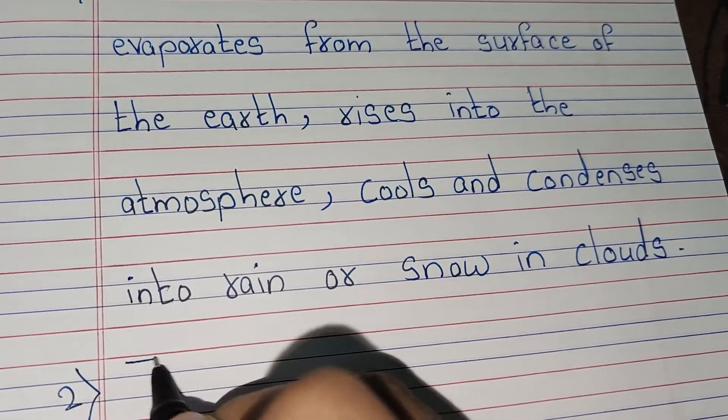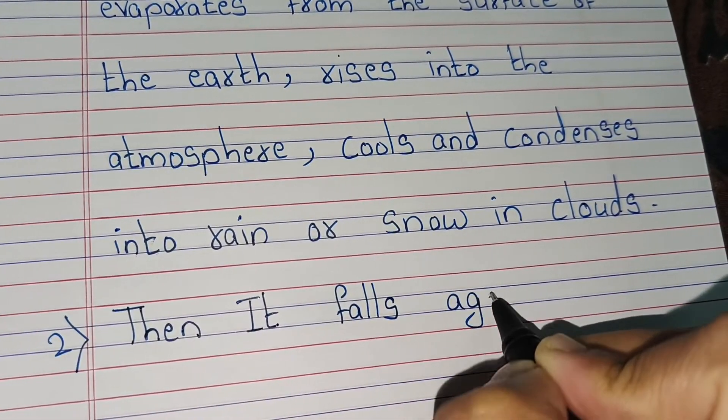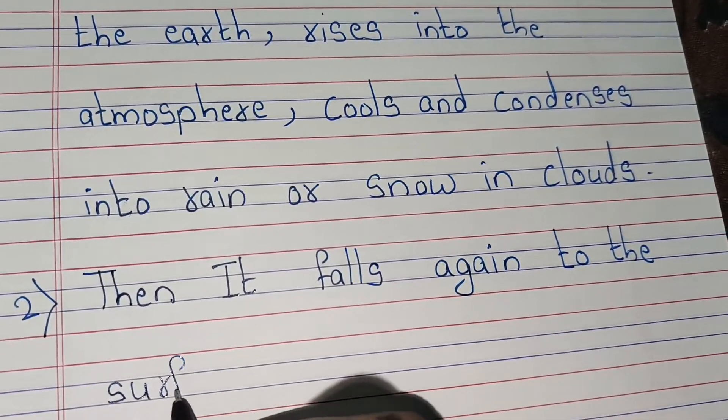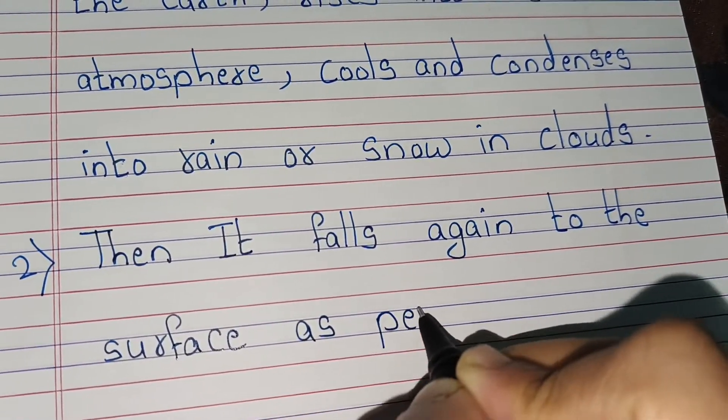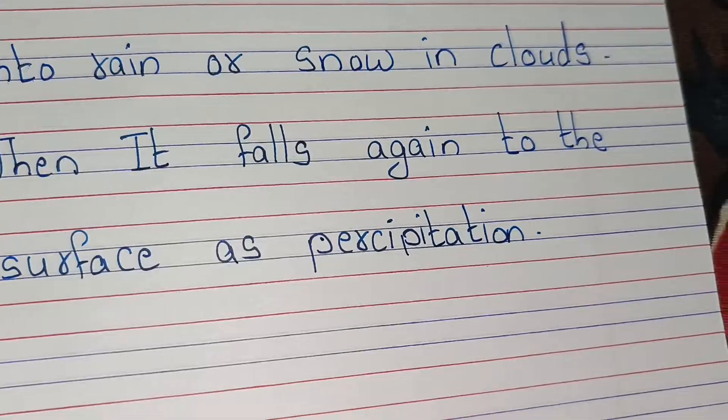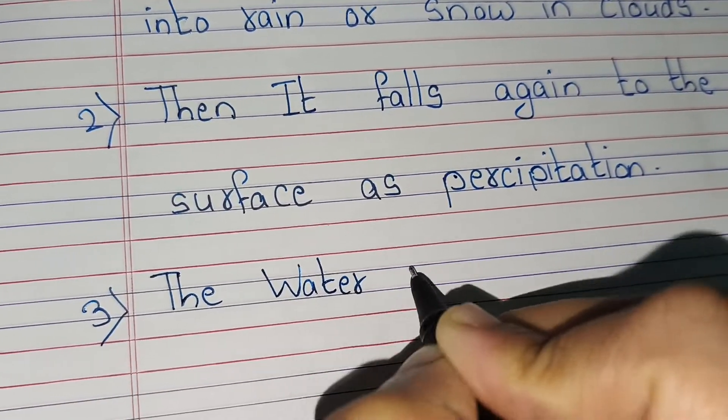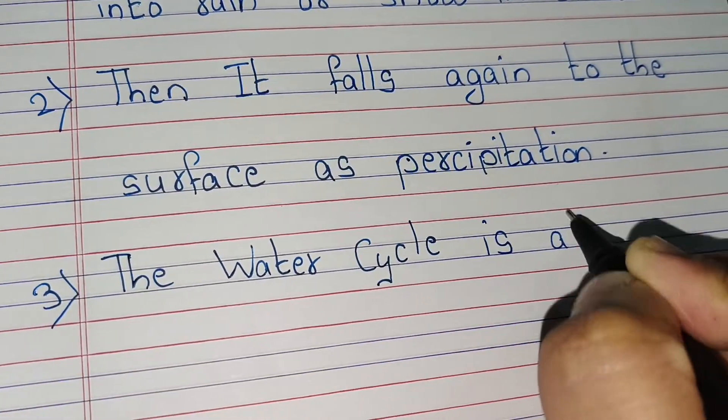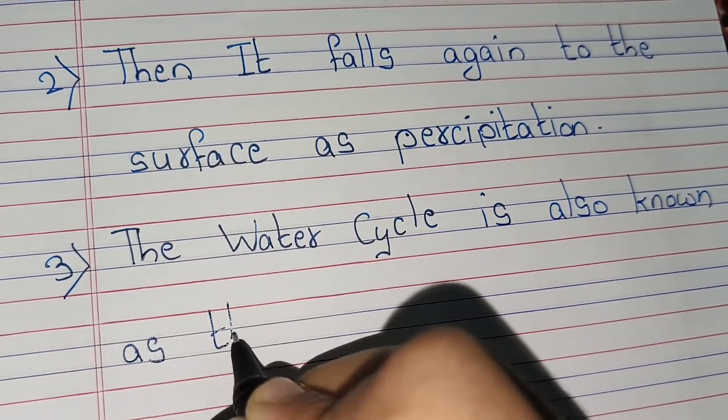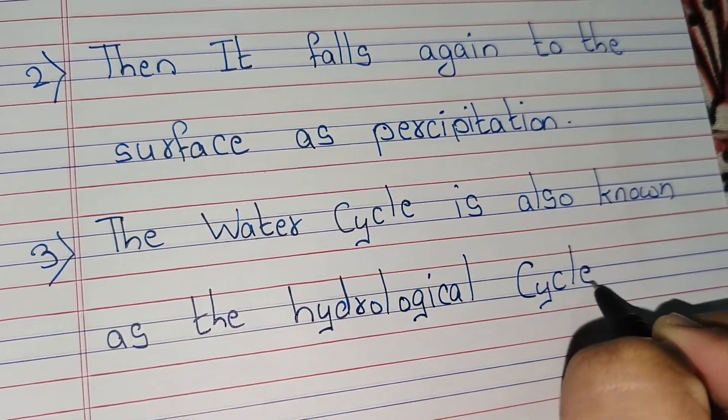Second point, then it falls again to the surface as precipitation. The water cycle is also known as the hydrological cycle or hydrologic cycle.